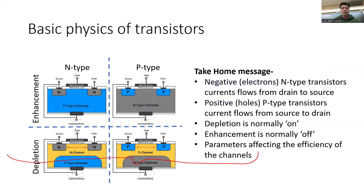So the take-home message for today's lecture: for n-type transistors, the current flows from the drain to the source.